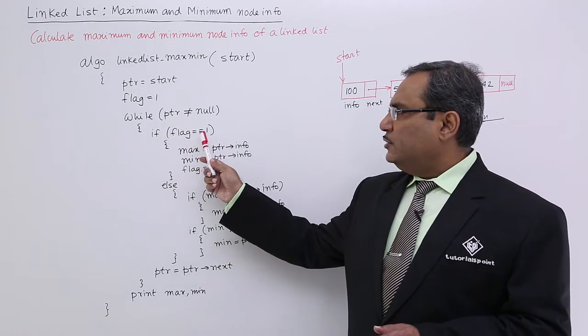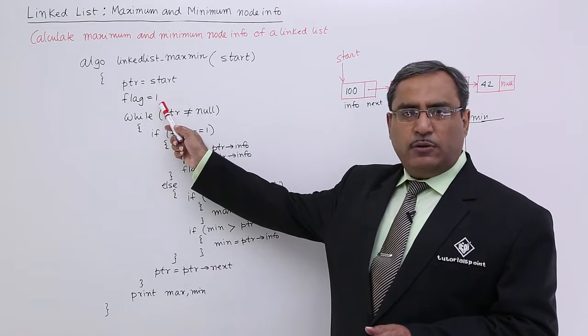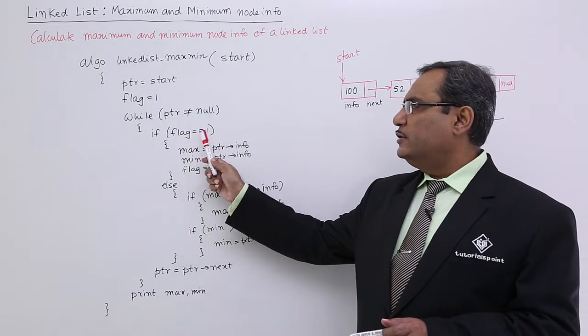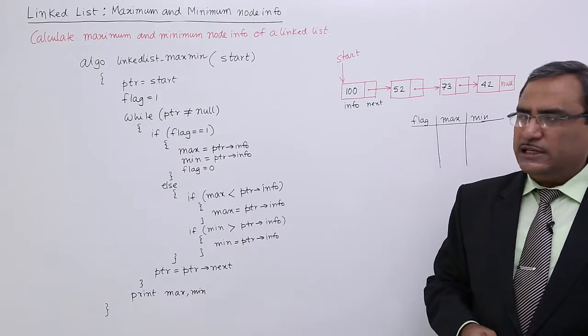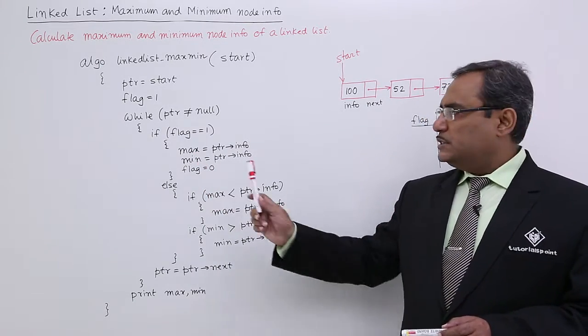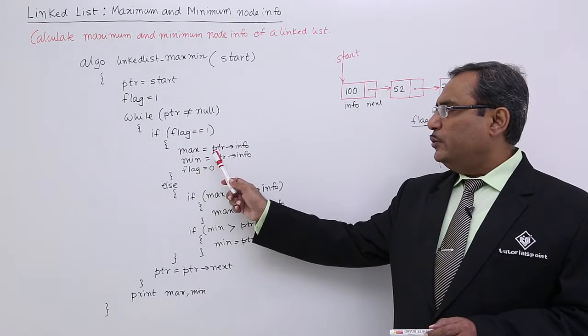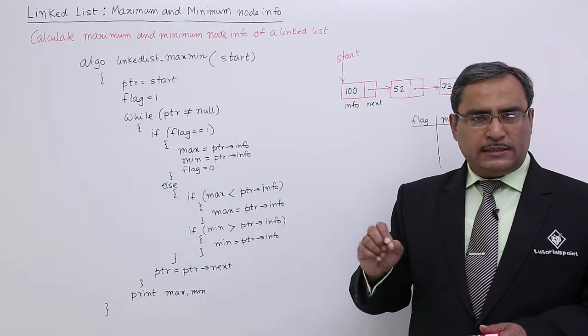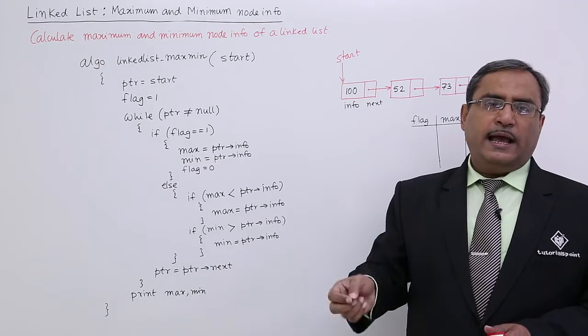If flag is equal to 1—yes, initially flag was 1 before entering into the loop—this condition will be satisfied. I am unconditionally updating max and min with ptr->info. So ptr->info has been kept in max as well as min.